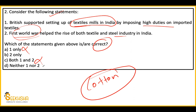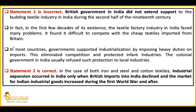The first statement is wrong — the British never supported textile mills in India from any angle. The answer is option B — only statement two is correct. In fact, Indian textile factories had to face many problems because cheap finished textiles were imported from Britain. Industrialized countries imposing colonies would put heavy import duty on finished products coming into their country to protect and support their own local industry. But Britain's colonial government never did this for India because India was their market.